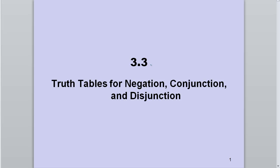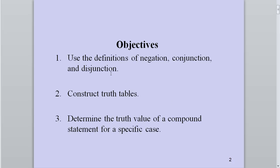Today we're going to do section 3.3a, the first part of the section. We're going to talk about truth tables for negation, conjunction, and disjunction. We'll do the simple two-statement versions in this video, and then the three-statement versions in the next video. We'll use the definitions of negation, conjunction, and disjunction to construct some truth tables. Remember: negation is 'not,' conjunction is 'and,' and disjunction is 'or.'